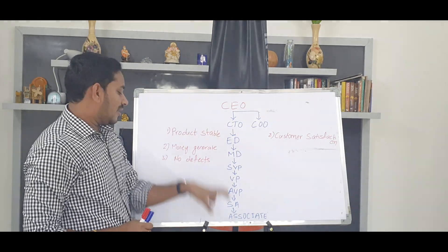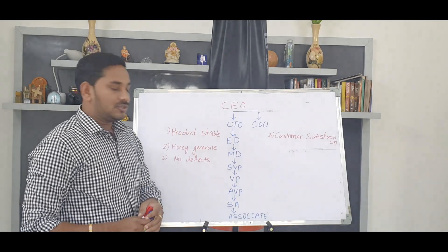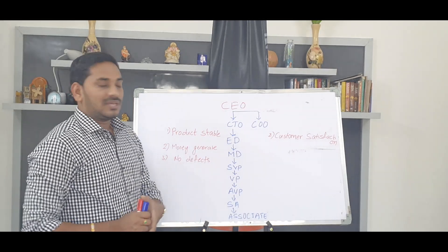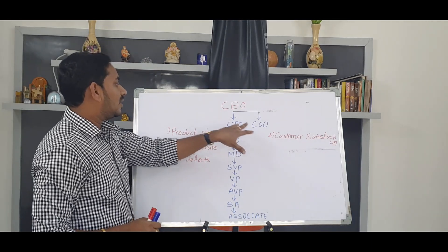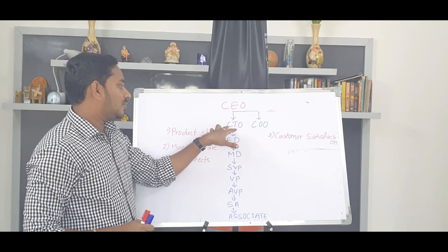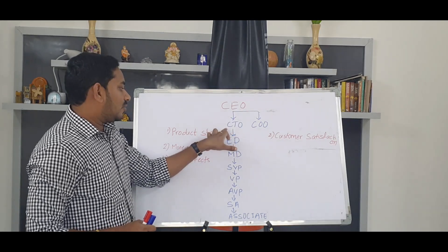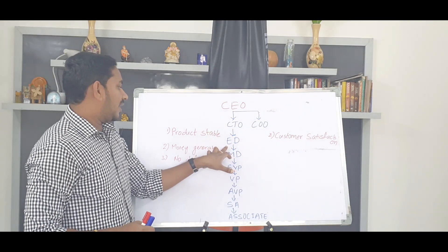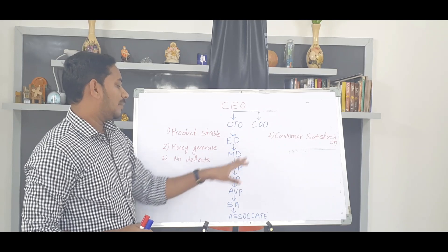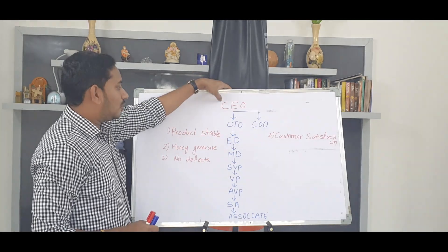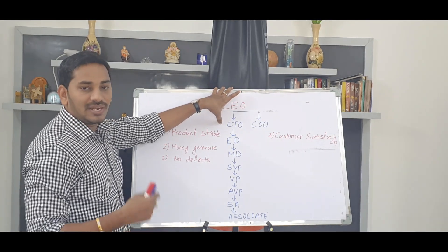The CEO is associated with the team. If you have any product stability issues or defects, it is a hierarchy. The CEO's responsibility is to manage these things properly — including the Executive Director. There are multiple Executive Directors, multiple MDs, and multiple SVPs in this structure.